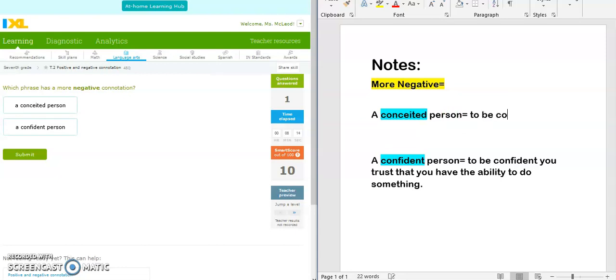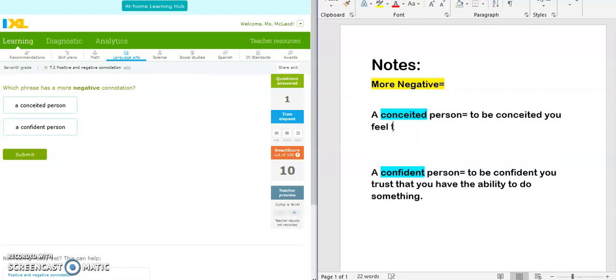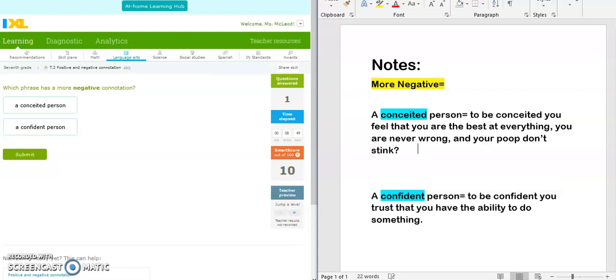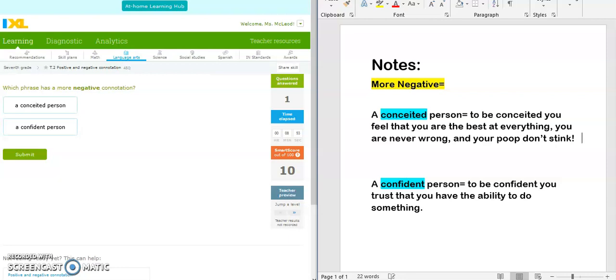So let's define conceited person. A conceited person, you feel that you are the best at everything. You are never wrong and you're the best at everything. If you're a conceited person, you just think you're a know-it-all. You're always right. No one's as good as me. I ought to get everything given to me because I'm the best.